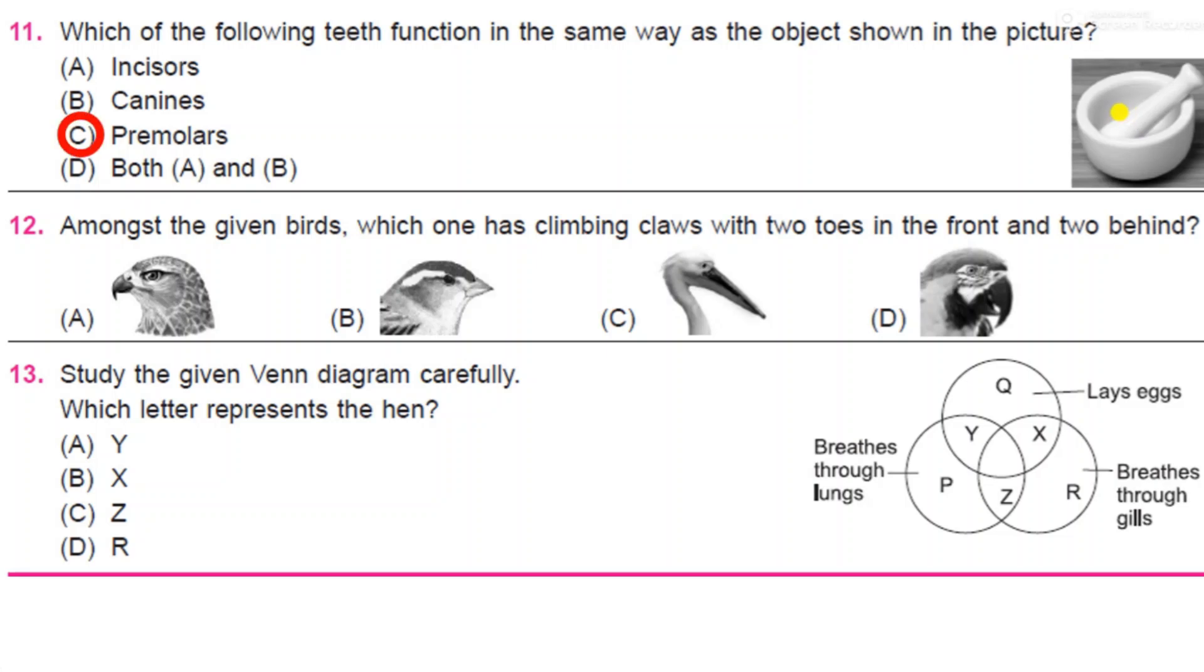Next: amongst the given birds, which one has climbing claws with two toes in the front and two behind? See the options given here. It is D.